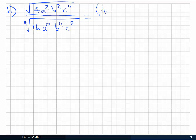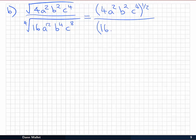On the top we've got 4a²b²c⁴. That's going to be to the 1/2, because it's a square root. And on the bottom we'll have a 1/4 power of 16a¹²b⁴c⁸.